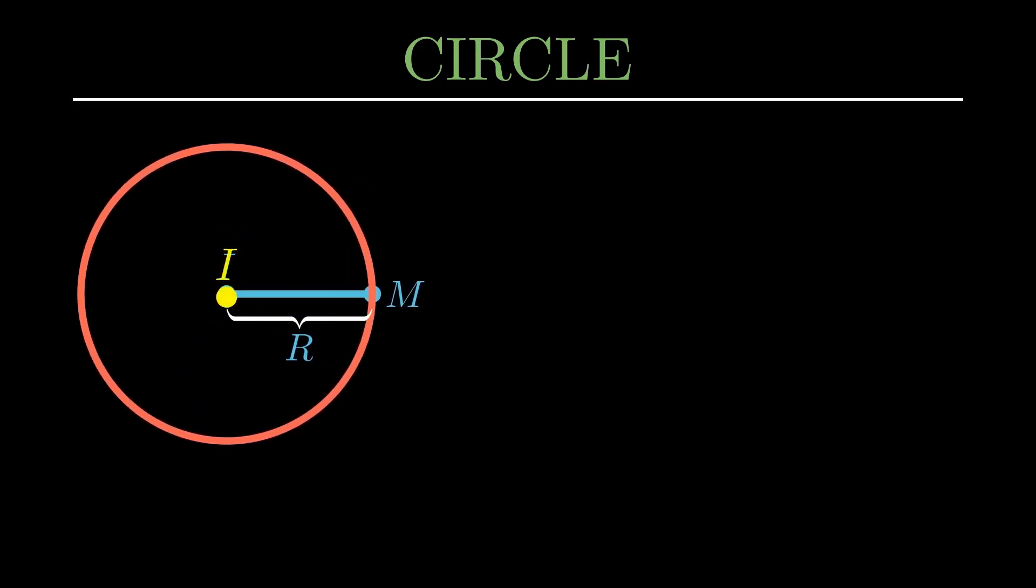Circle. A circle is a plane shape defined as a set of points that are equidistant from a fixed point. The fixed point I is called the center of the circle.